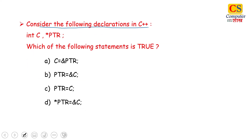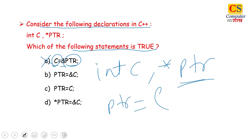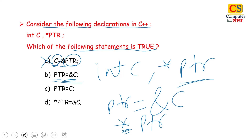Next question: Considering the following declarations in C++ — C is a variable and *PTR is a pointer — which of the following statements is true? We will not add a variable to the address of C directly. The correct statement is PTR stores the address of C, i.e., PTR = &C. This is correct.